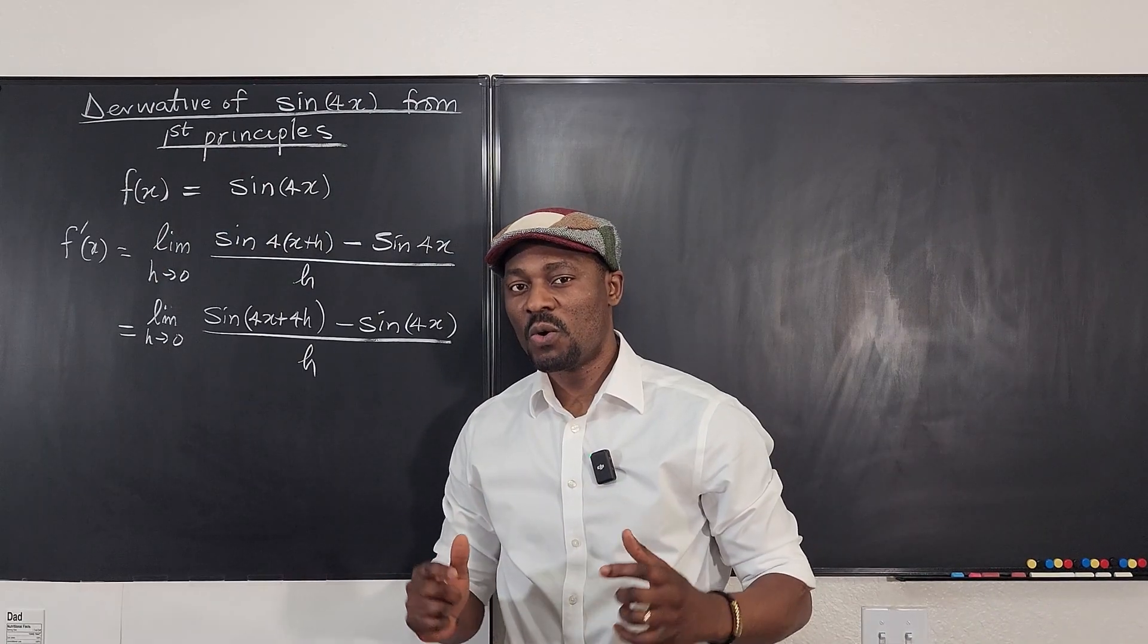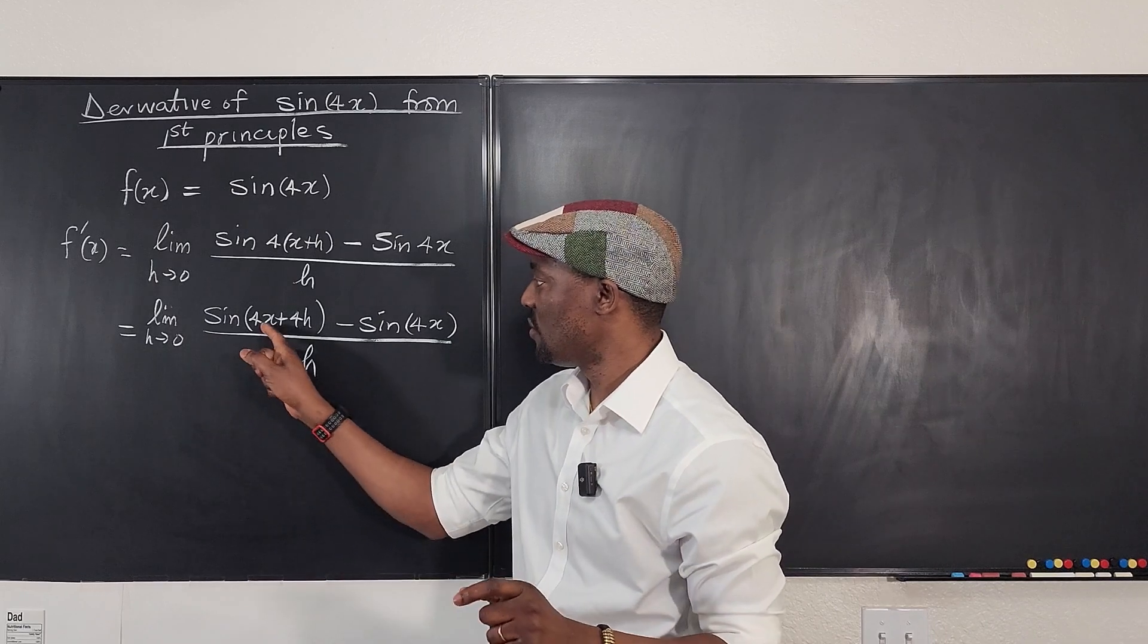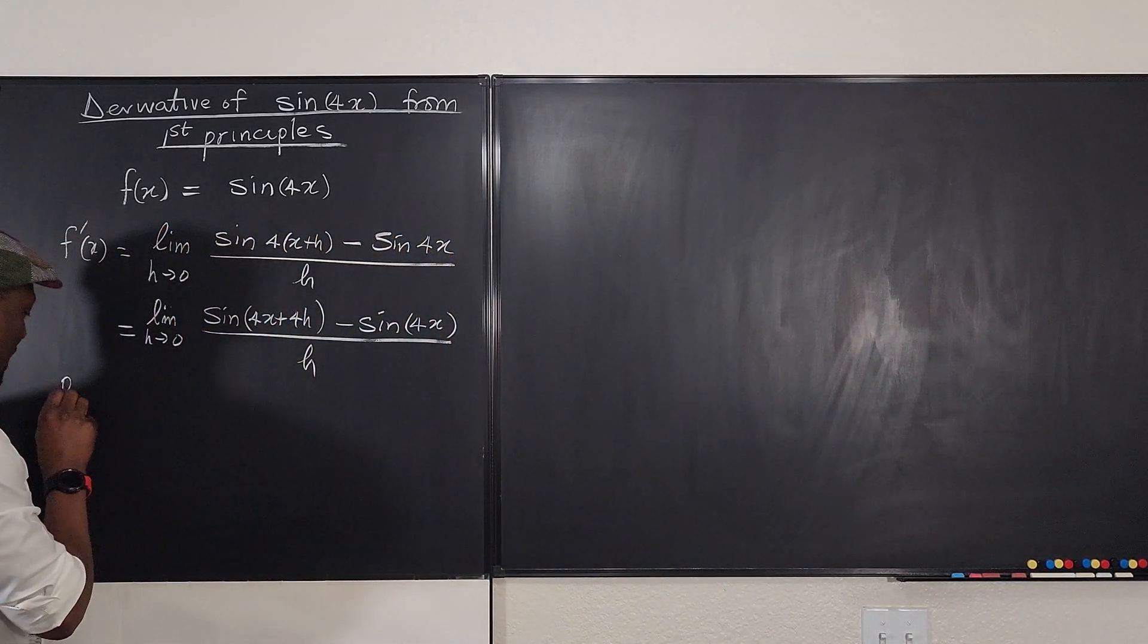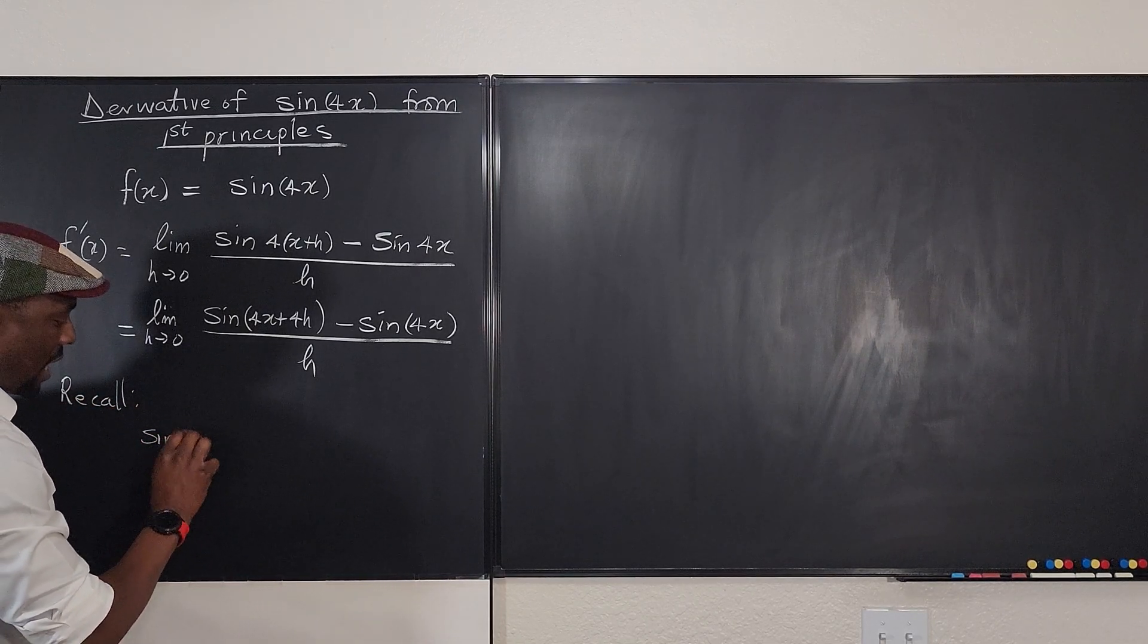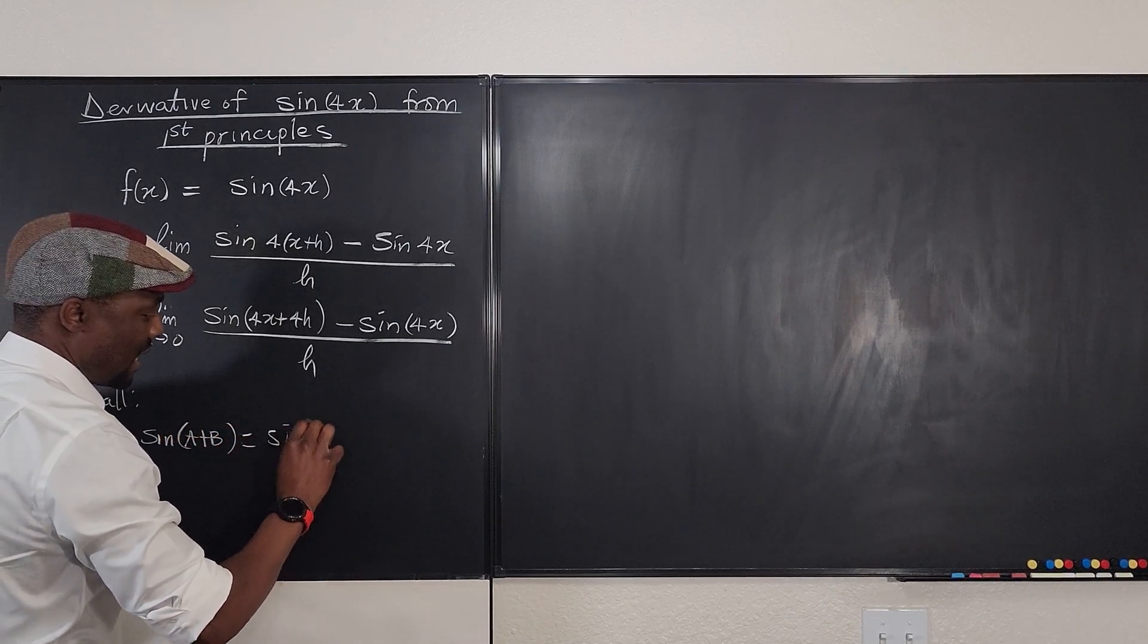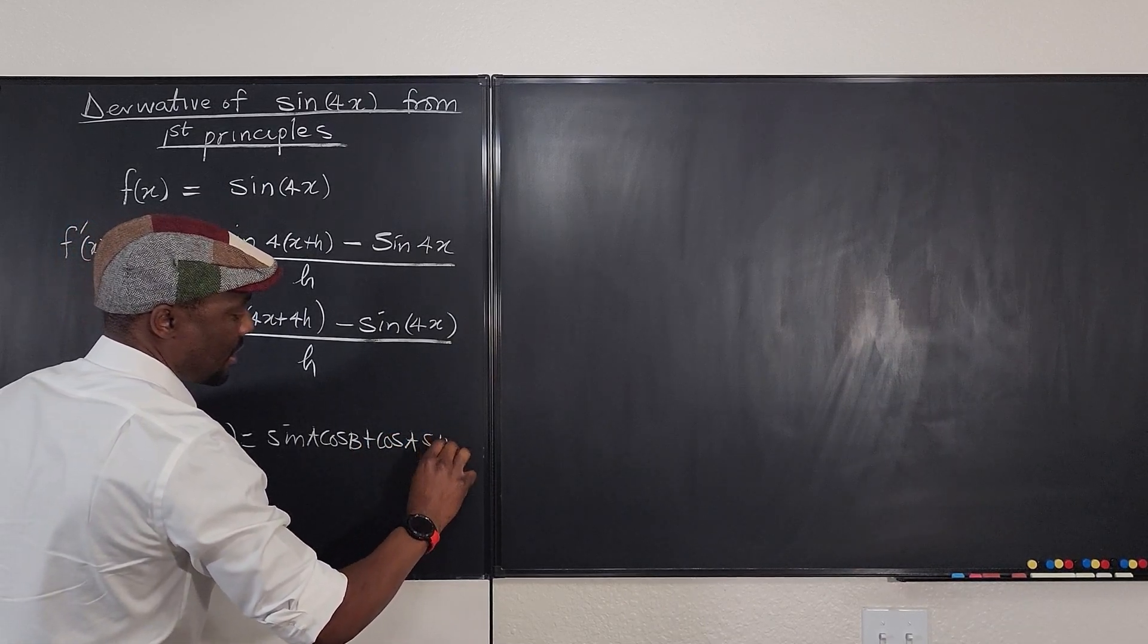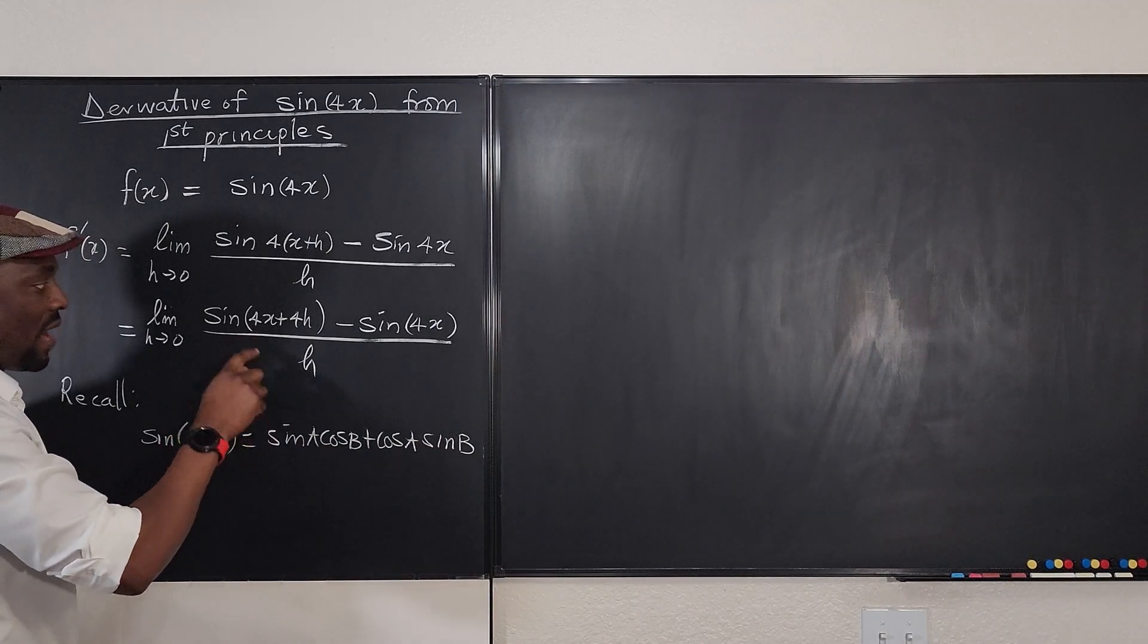I need you to recall the angle sum identity that is sin(a+b) when you have two things you're adding together. And you remember that, so let's recall that sin(a+b) is the same thing as sin(a)cos(b) + cos(a)sin(b). This is very important for the next line I'm about to write.